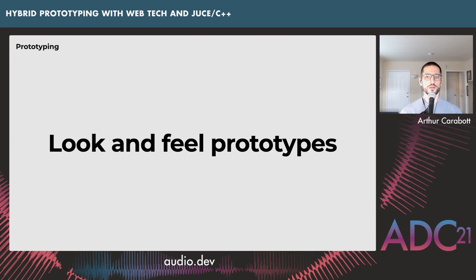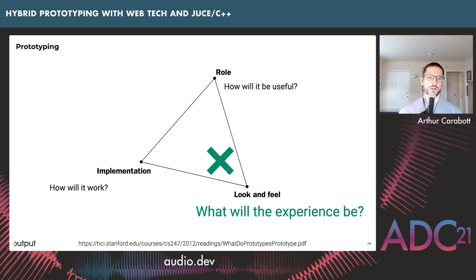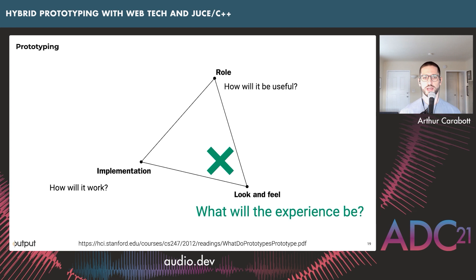That paper defines a three-dimensional space for prototypes: look and feel (what will the experience be?), role prototypes (how will this be useful to someone?), and implementation prototypes (checking how it will work technically). These aren't mutually exclusive — by creating a look and feel prototype, you inevitably do a little bit of implementation and role prototyping too.